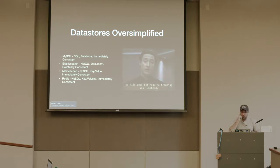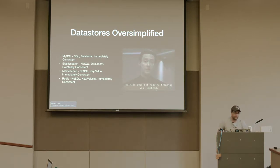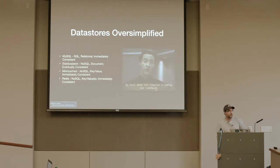We're talking about three things. MySQL, which is Structured Query Language — it's relational and immediately consistent. Elasticsearch, which we'll talk about more — it's really like a search database, a NoSQL thing where you just pass it documents, and it's eventually consistent. And then Memcached and Redis — you probably think of them as caching data stores, and that's generally where you're going to use them. There's a benefit to those being available, and we'll get into that as well.